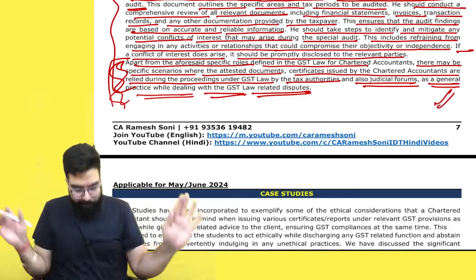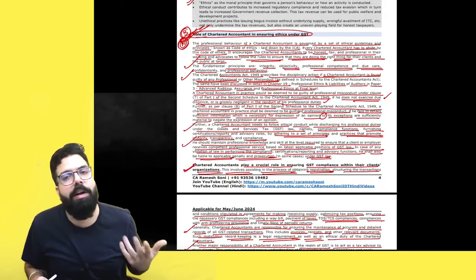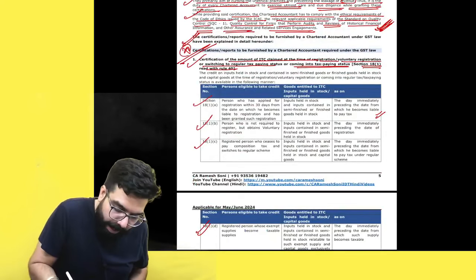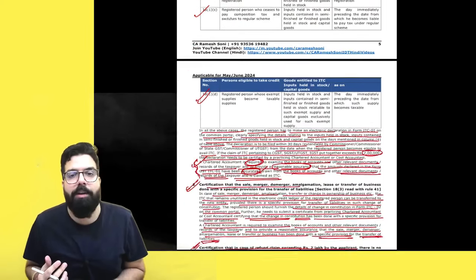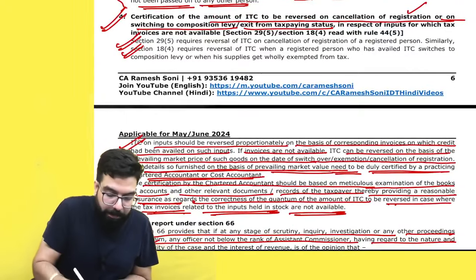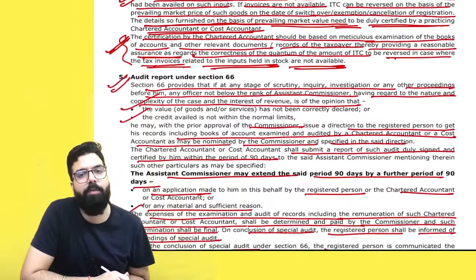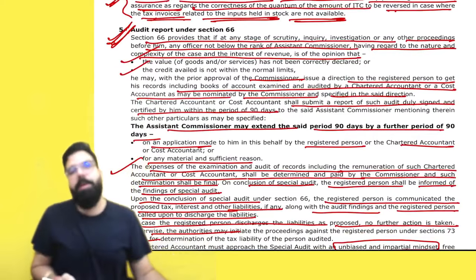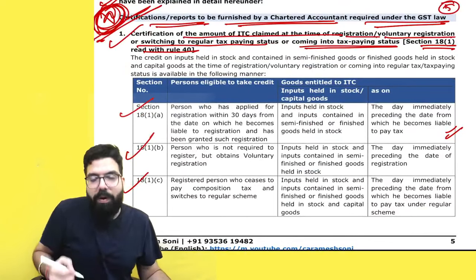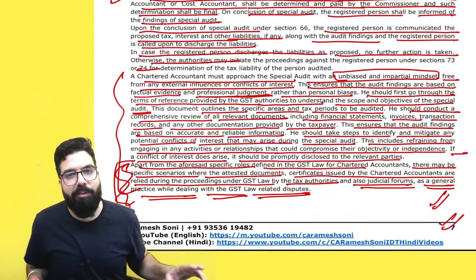Regarding exam questions: out of this material, you can get a three-mark question on the role of a chartered accountant in ensuring ethics under GST. For five marks, they can ask: what are the various certifications and reports to be provided by a chartered accountant? Remember ITC-01, ITC-02, refund certification, ITC reversal using market price (ITC-03), and special audit report under Section 66. That's all for the ethics chapter — congratulations!